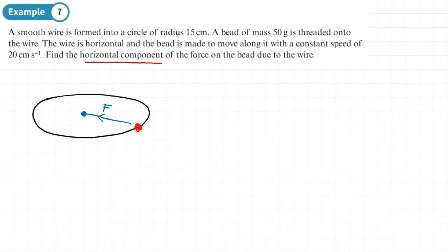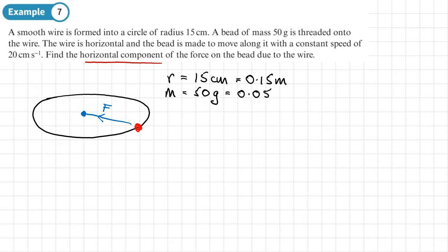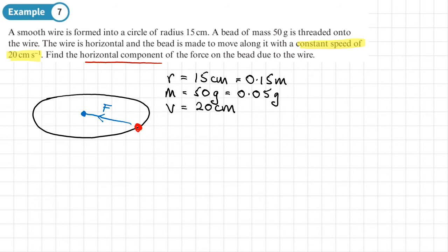Converting units: the radius of 15 centimeters becomes 0.15 meters; the mass of 50 grams becomes 0.05 kilograms; and the constant speed of 20 centimeters per second becomes 0.2 meters per second.